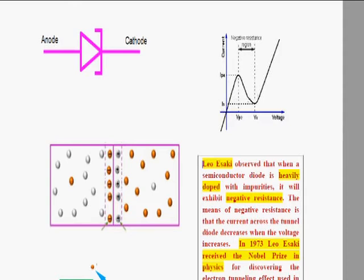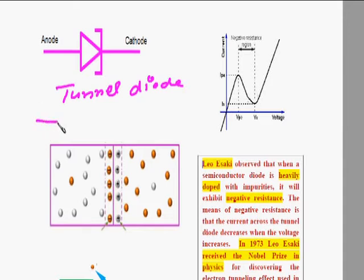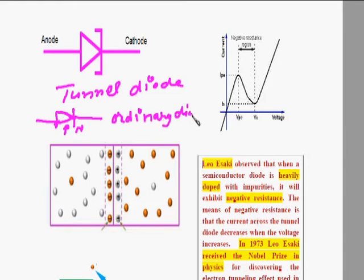A tunnel diode is a P-N junction diode that exhibits negative resistance. This is the symbol of the tunnel diode. The normal diode has two terminals — anode and cathode — but in the tunnel diode there is a difference in the N terminal. The tunnel diode is basically a P-N junction diode with heavy doping.